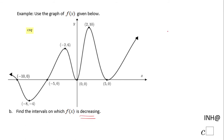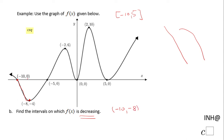Part b is the same idea, but we are asked when the function is decreasing. A function is decreasing when it goes down from left to right. One interval starts at negative 10 and ends at negative 8 — we see the value starts at 0 and decreases to negative 4. Then there's another interval from negative 2 to 0.